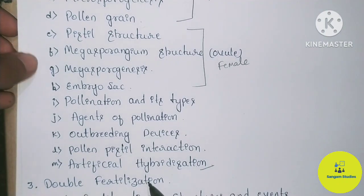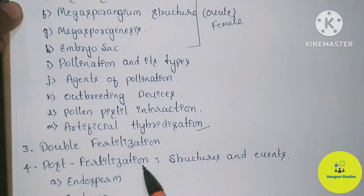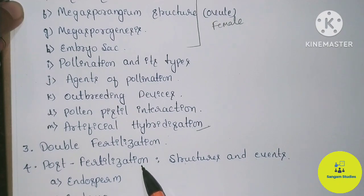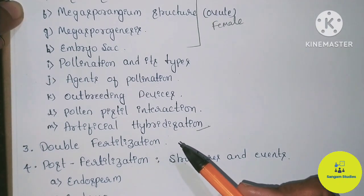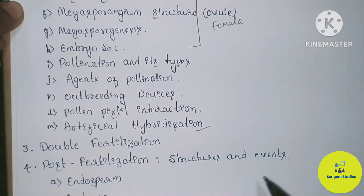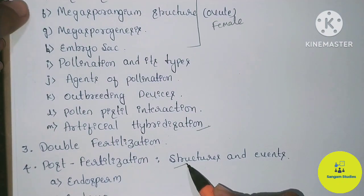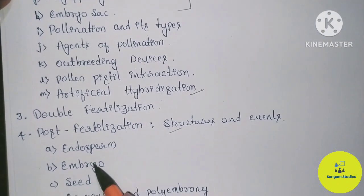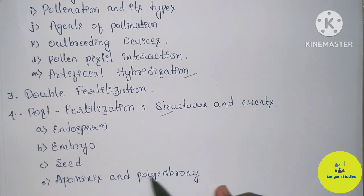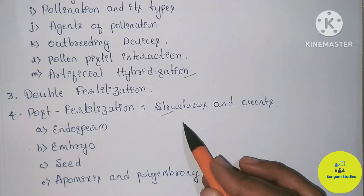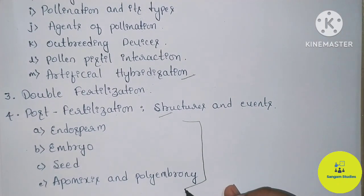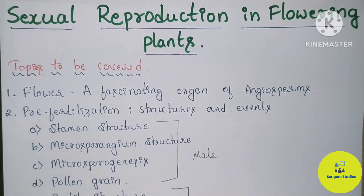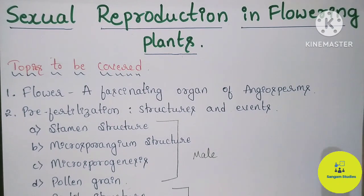The third topic is Double Fertilization. Next is Post-Fertilization Structures and Events. Post-Fertilization is also a part of the events. The sub-topics include Endosperm, Embryos, Seeds, Apomixis, and Polyembryony. These four sub-topics are related to sexual reproduction in flowering plants and will be completed in full.